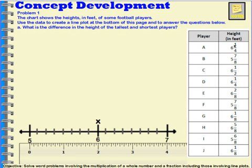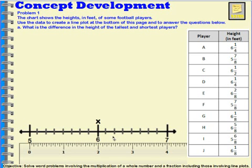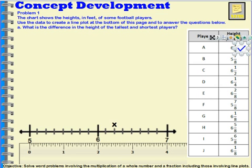I'm trying to figure out where six and one fourth would be. I can think about half, then break the half into two parts to give me fourths. So I can move this x here — Player A is represented by this x. Just to help me keep track, I'm going to put a check mark in this box. It helps me attend to precision and make sure I don't skip one or put one in more than once.